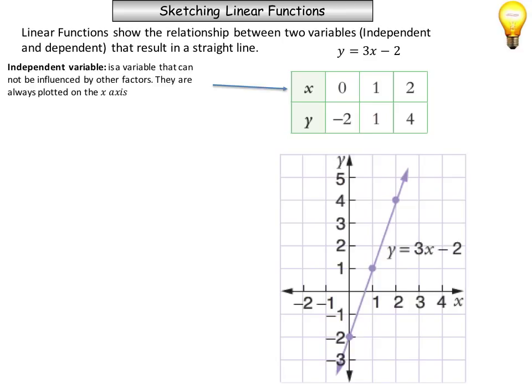The independent variable is a variable that cannot be influenced by other factors, and they're always plotted on the x-axis. We're looking at how the value of our dependent variable changes based on a change in an independent variable.